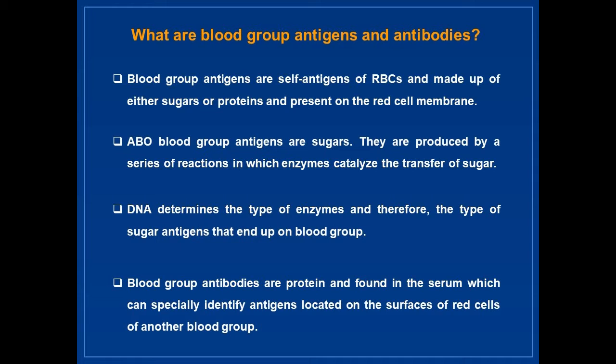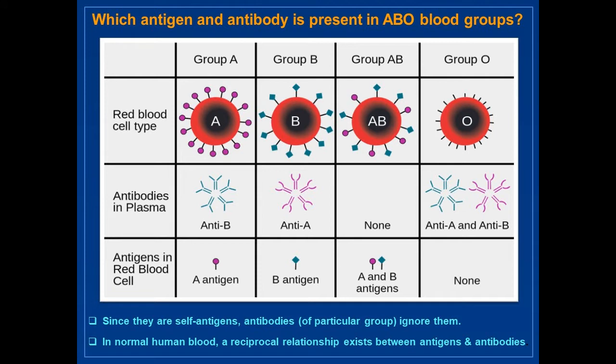Blood group antibodies are proteins found in the serum which can specifically identify antigens located on the surface of red cells of another blood group. Now, we shall see which antigen and antibody is present in each ABO blood group. Blood group A contains antigen A and antibody B. Blood group B contains antigen B and antibody A. AB group has both A and B antigens and no antibody. O group contains no antigen and has both A and B antibodies. Since they are self-antigens, antibodies ignore them. In normal human blood, a reciprocal relationship exists between antigens and antibodies.